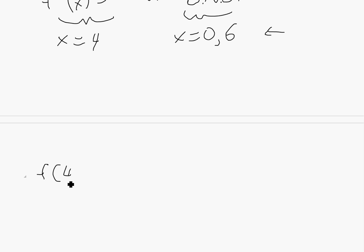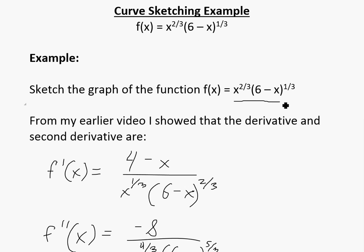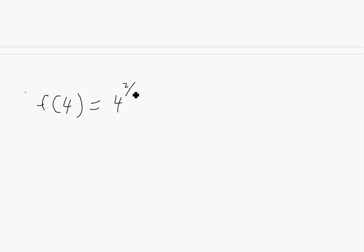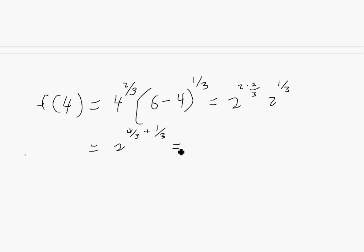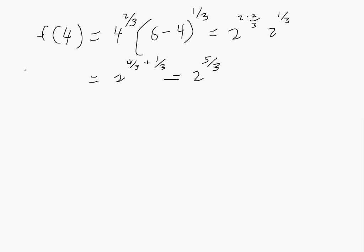At these critical numbers, first find the values of the function. For f(4): we plug in to get 4^(2/3) times (6 minus 4)^(1/3). We can write 4^(2/3) as (2^2)^(2/3) = 2^(4/3), and (6 minus 4)^(1/3) = 2^(1/3). Adding the exponents since the base is 2, we get 2^(4/3 + 1/3) = 2^(5/3). So f(4) = 2^(5/3).